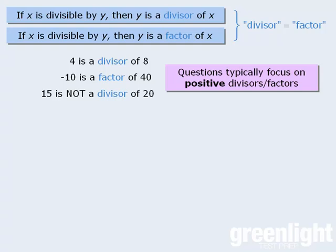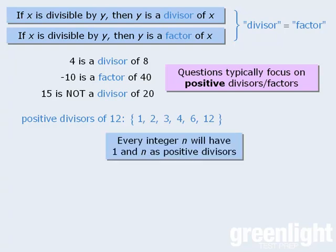Alright, let's practice our knowledge of divisors. What are the positive divisors of 12? Well, these are the positive divisors of 12 since they all divide into 12 without leaving a remainder. You'll notice here that the positive divisors of 12 include 1 and 12. As you might imagine, every integer n will have 1 and n as positive divisors.